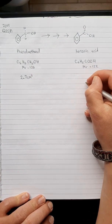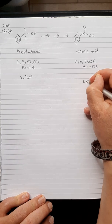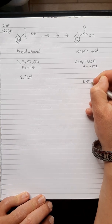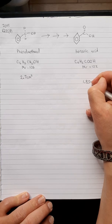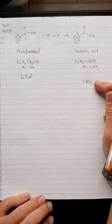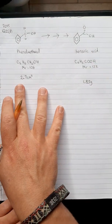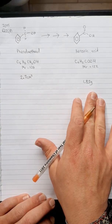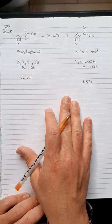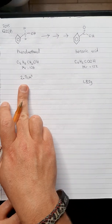We're ending up with 1.83 grams of the benzoic acid. You can see that straight away there's grams and centimeters cubed, and they've given us a density here for the phenylmethanol.